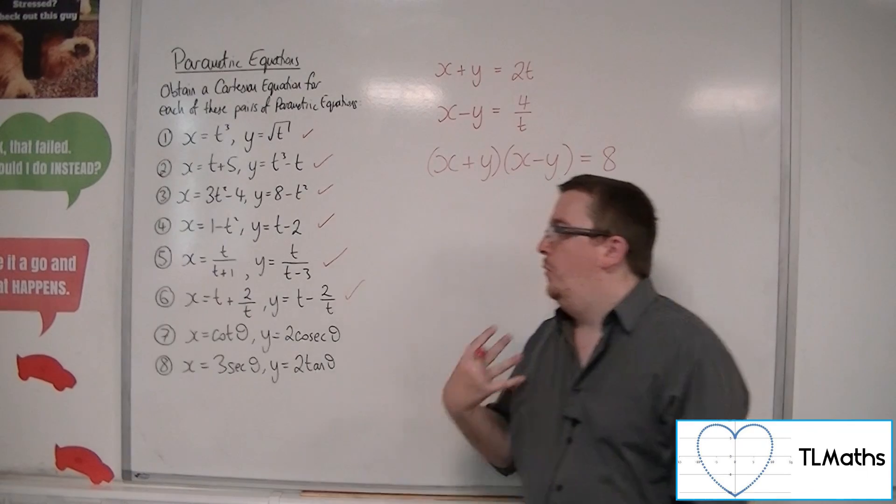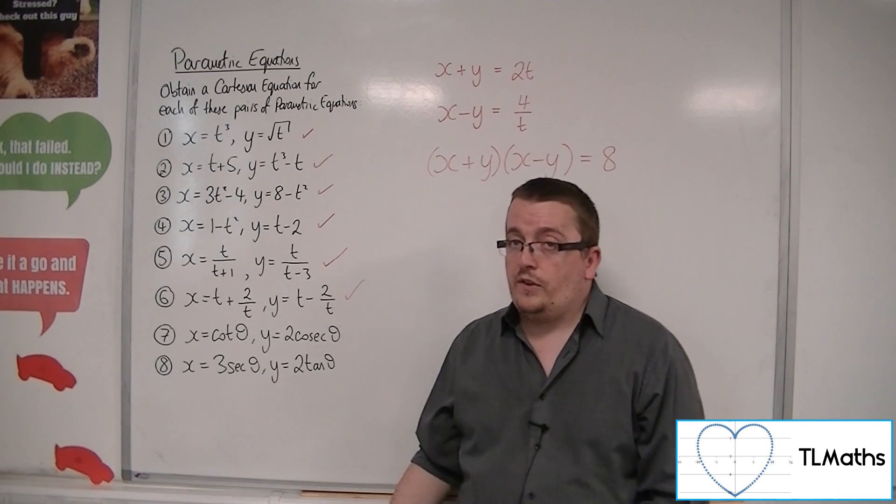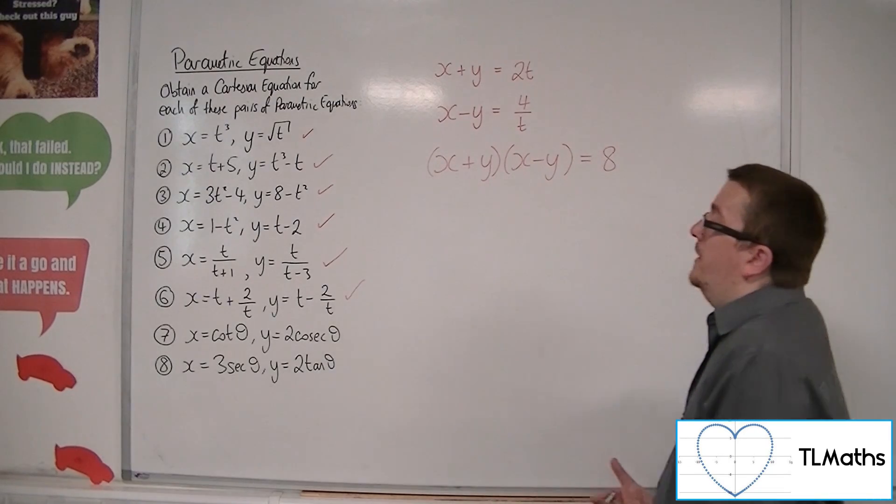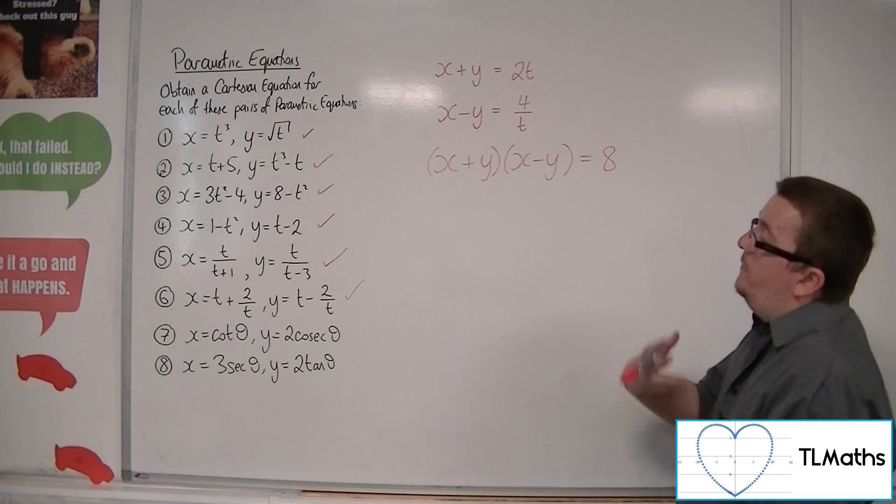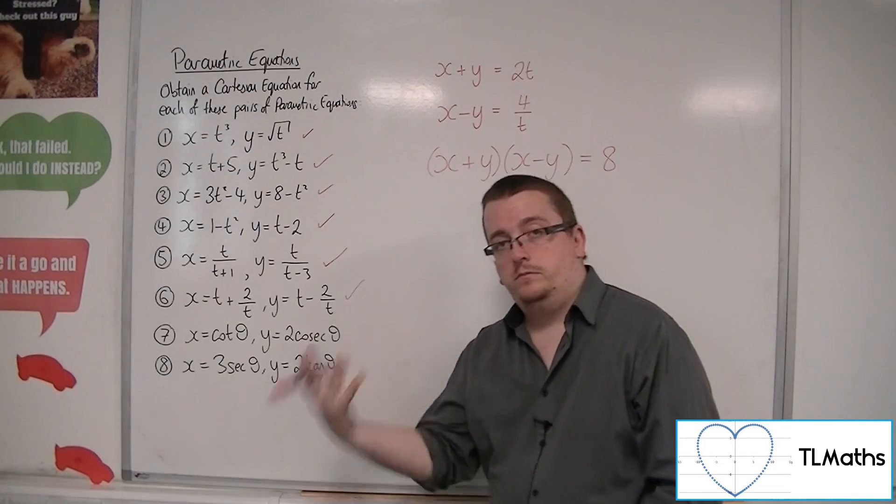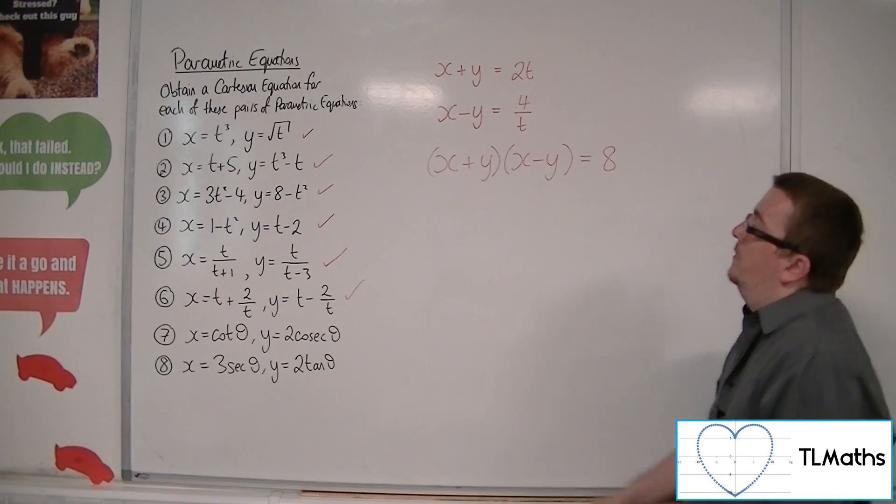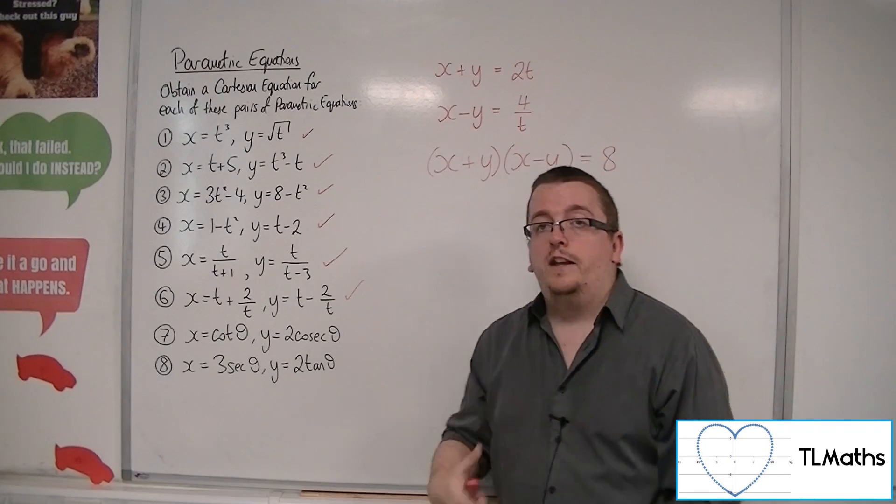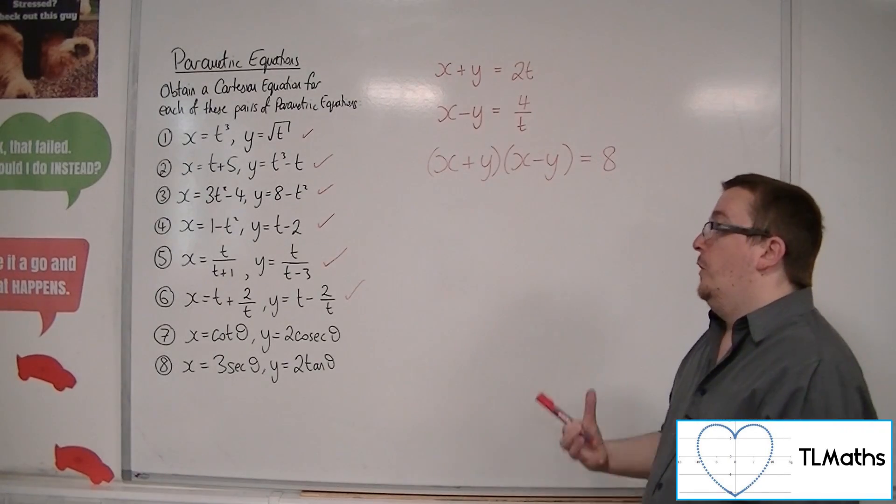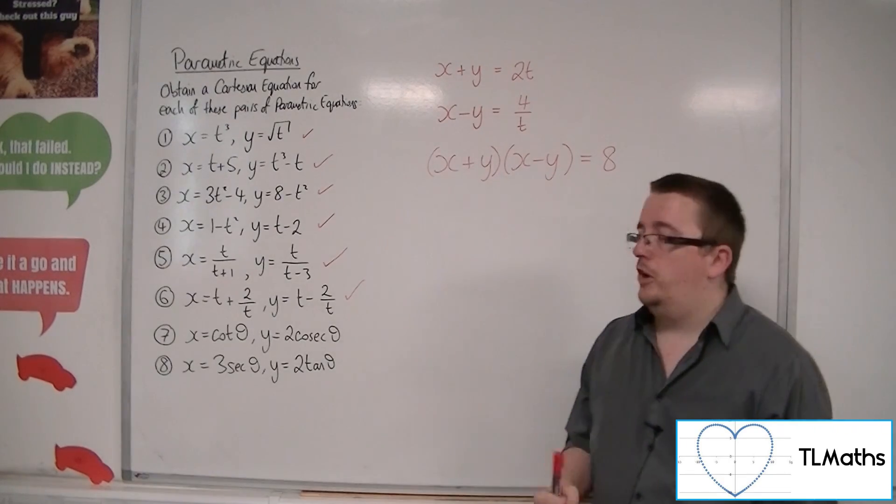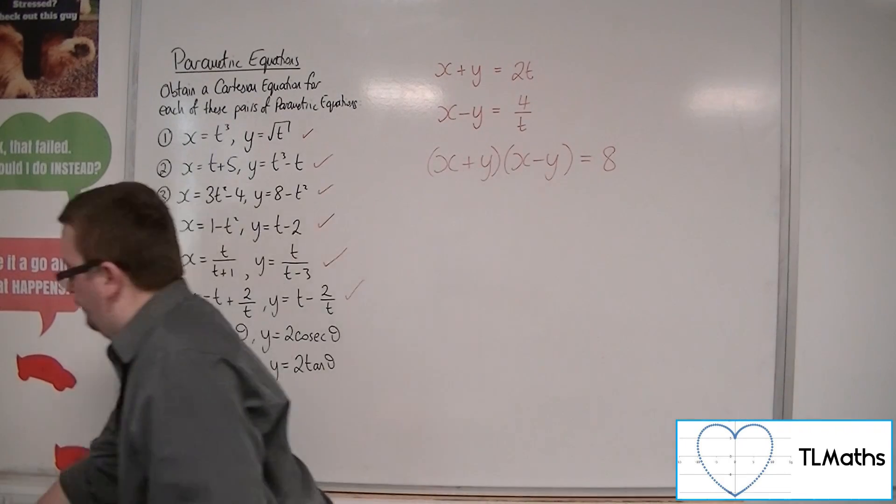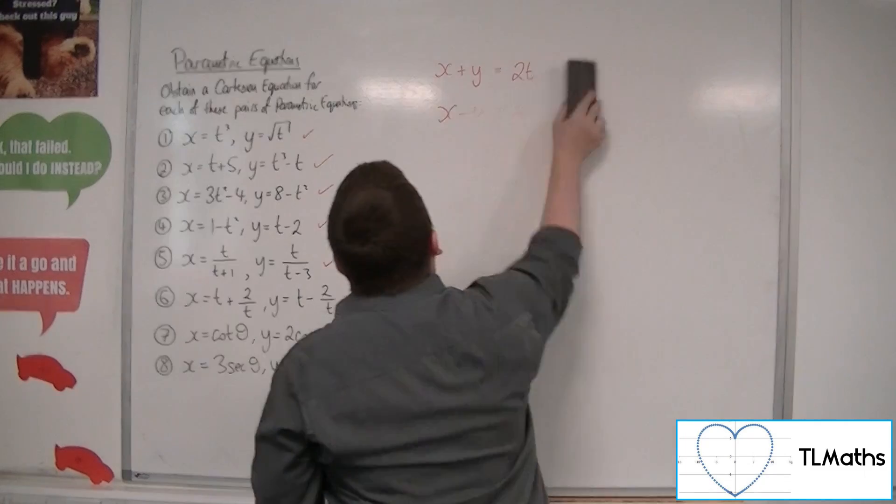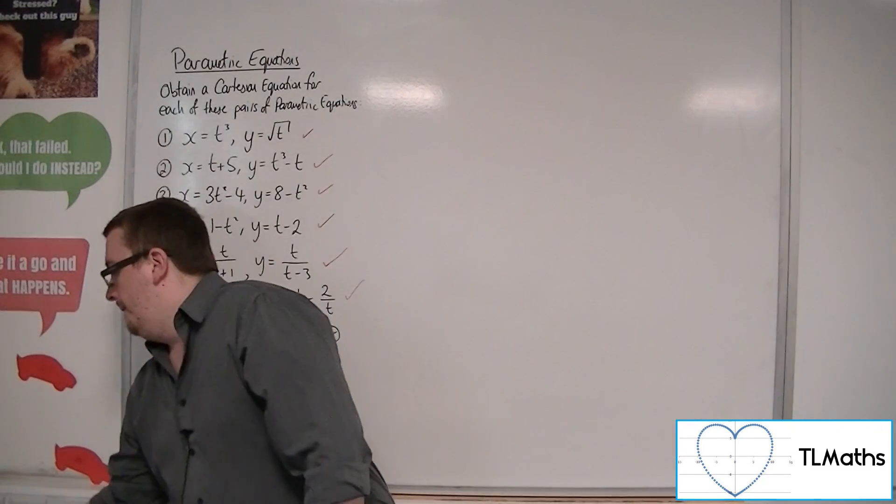In some cases where these kind of questions have come up previously in exams, they've given you a hint. And it's either in the case of, by finding x plus y and x minus y, show that you can write the Cartesian equation as x plus y, x minus y equals k, and you need to calculate k. So, there have been questions that have involved that type of problem before. But not necessarily as, like, do this from scratch, okay?